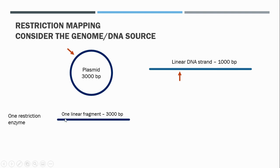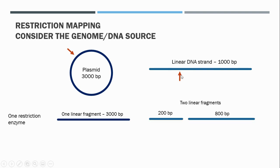But if the source of our DNA is already linear, and we cut it with one restriction enzyme, we are cutting that linear fragment into two pieces. So you now have, for example, a 200 and an 800 base pair strand, if that restriction enzyme were to cleave 200 base pairs from the left side of the sequence.